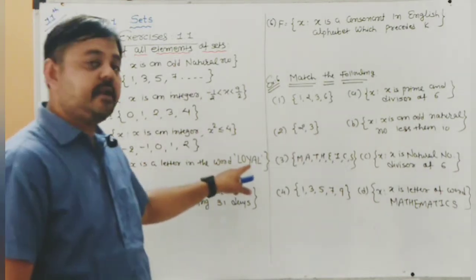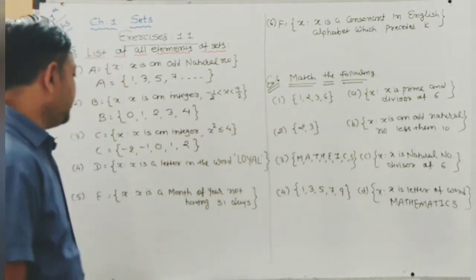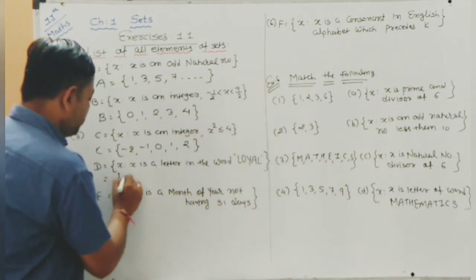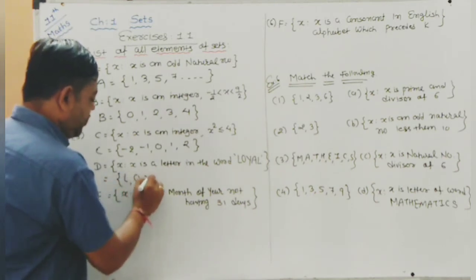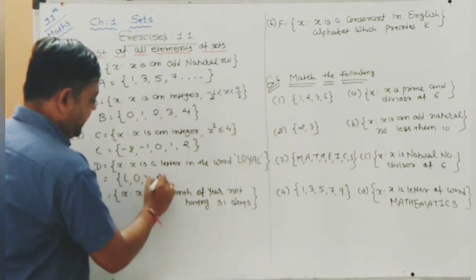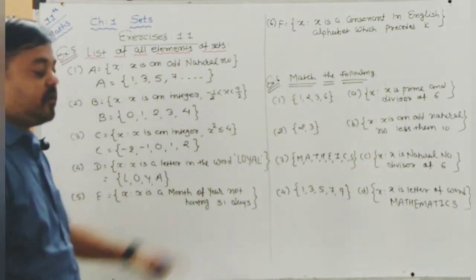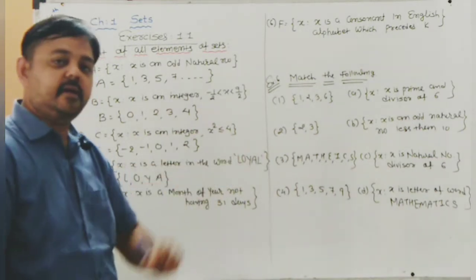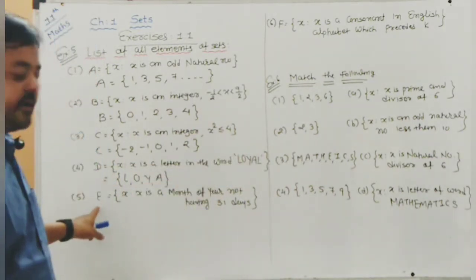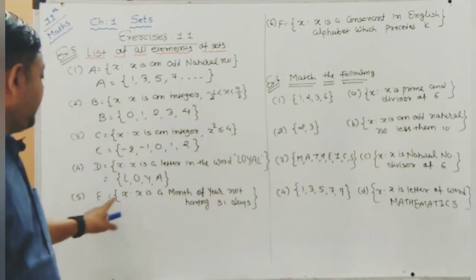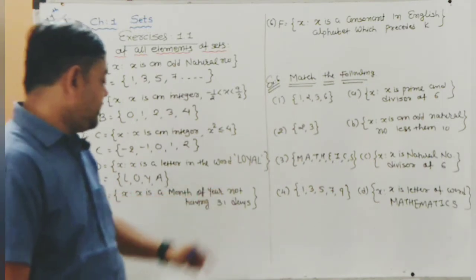Set D = {x : x is a letter in the word LOYAL}. The letters are L, O, Y, A — the repeated L at the end is not included again.